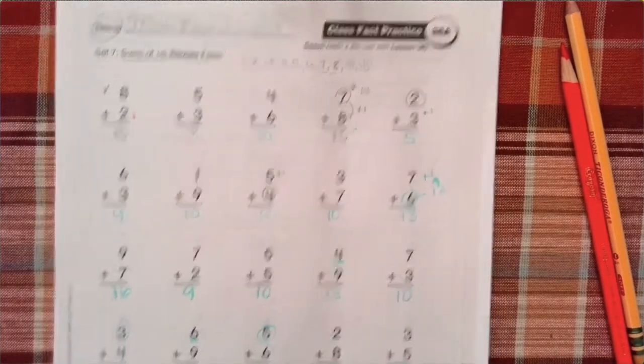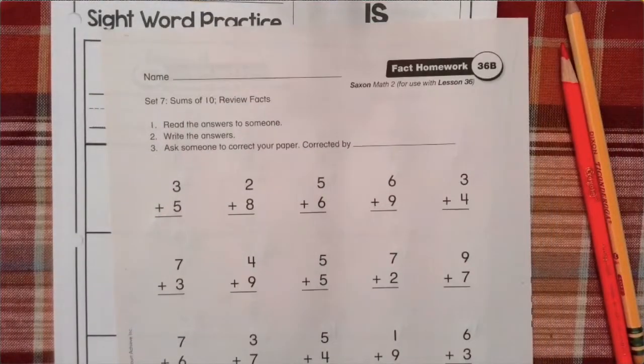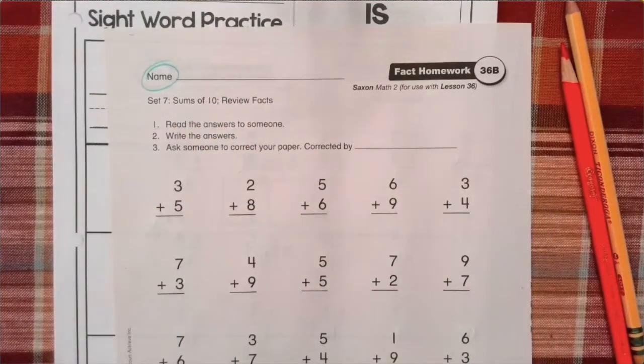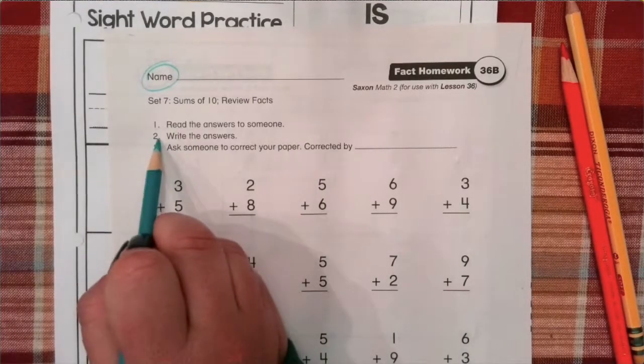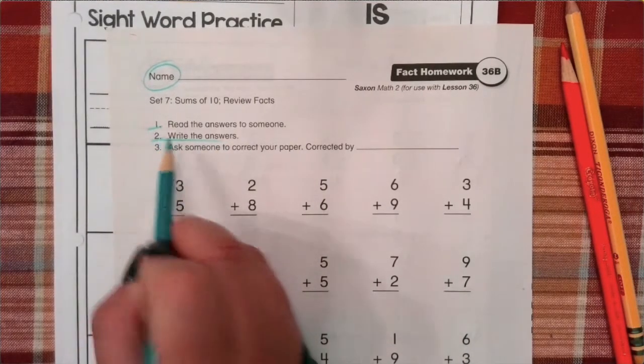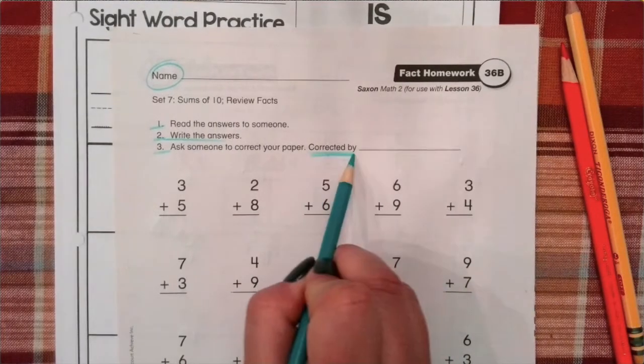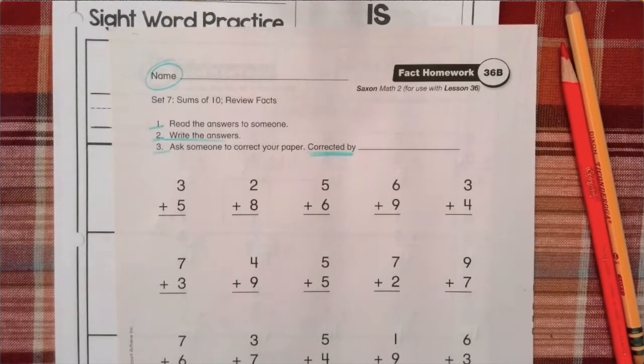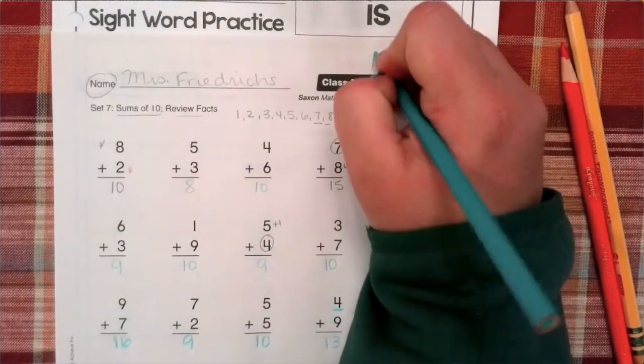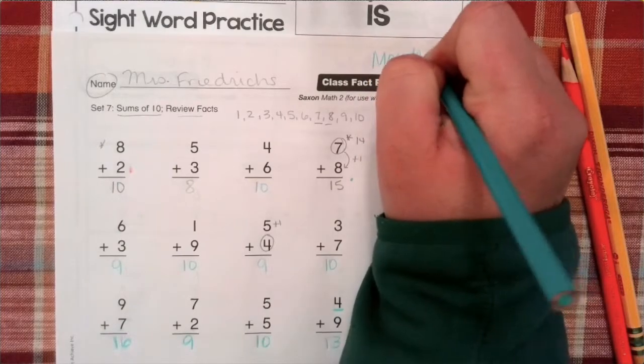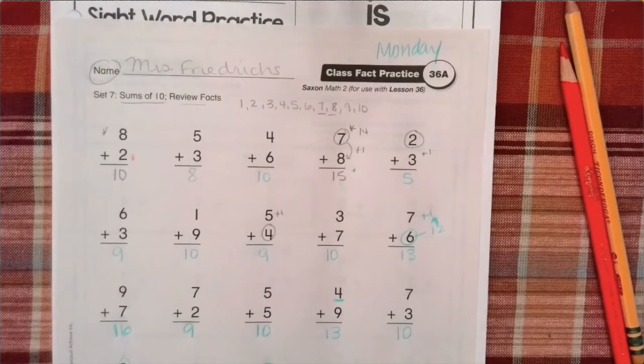Now that we've done the front side first grade, you are responsible for the back side. Read the answers to somebody. Then write them. Step one. Step two. Step three. Ask someone to correct your paper and then they are putting their name right there. When you're done. And this will go. When you are all finished first grade. This will go into your Monday folder.